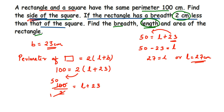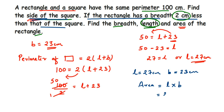Now we have to find the area — that's the last part. We have length equal to 27 centimeters and breadth equal to 23 centimeters. The area of a rectangle is length × breadth, so: area = 27 × 23. I'll leave this for you to solve. Remember, the unit will be in centimeters squared. I hope this question is clear — drop a comment if you have any doubts. Thank you for watching!